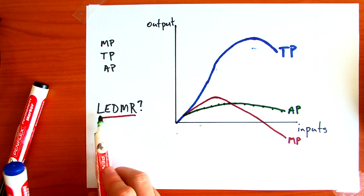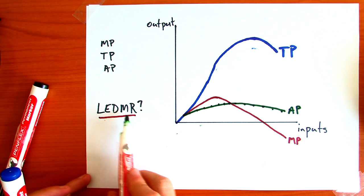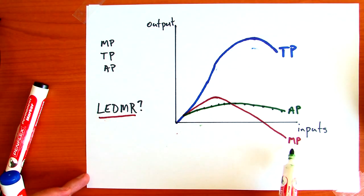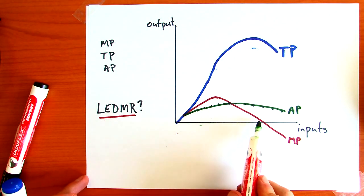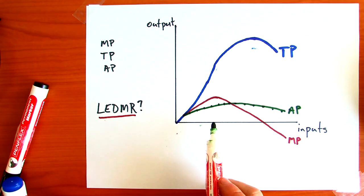So where do we see the law of eventually diminishing marginal returns in each of these three curves? Well, it's easy to see here in marginal production. Obviously, it's where marginal production becomes negative. But what about in total production?